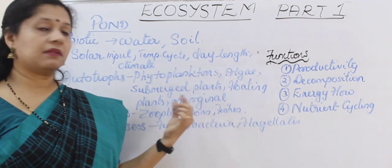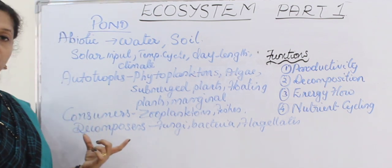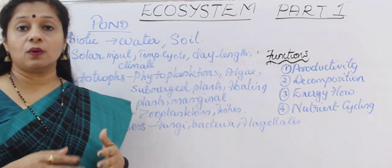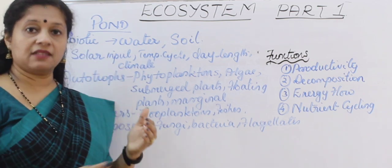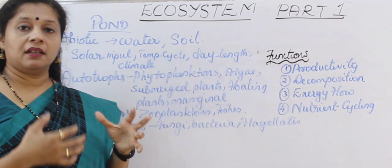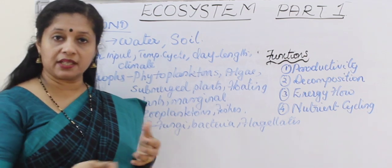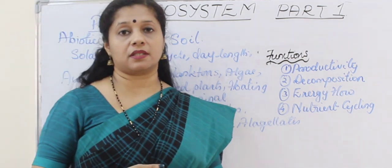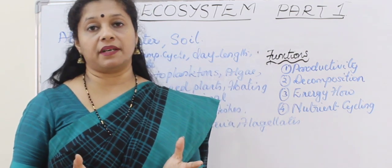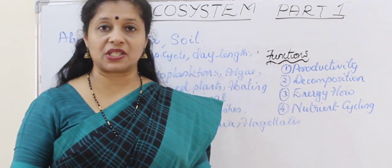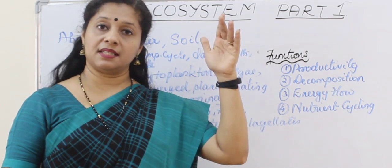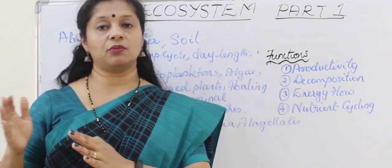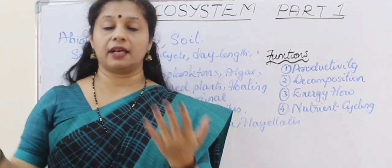Then there should be consumers — only then energy flow will happen. Zooplanktons are there and also fishes — small fish, large fish. Then decomposers: fungi, bacteria, and some flagellates are there to break down the substances back into the nutrients. Here actually there is productivity happening with the help of biotic factors. The decomposers decompose it back — as a result, nutrient cycling is happening and through the food chain there is energy flow also happening in this self-sustaining ecosystem. This is satisfying almost all parameters required for a self-sustaining unit called an ecosystem. So we can very well say pond is an ecosystem, where energy is coming from the sun and there is a unidirectional flow of energy from the sun to the plant, through the consumers, and finally evolved back into the atmosphere.